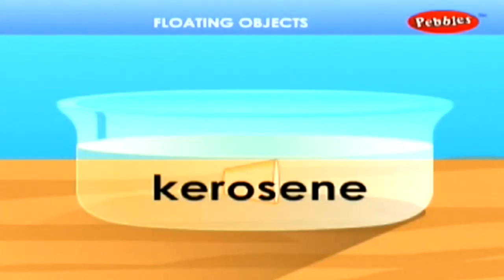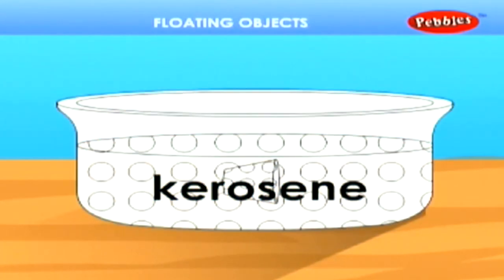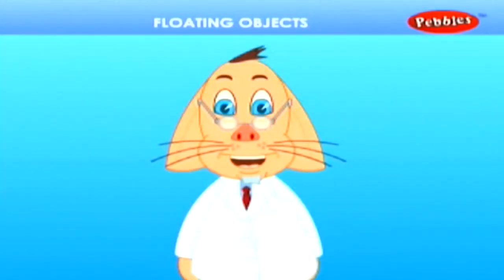Mercury is the densest of all liquids. We can measure the densities of all liquids with the help of an instrument called hydrometer.